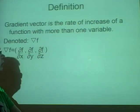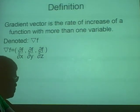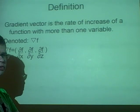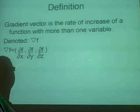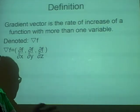First off, a definition as always. The gradient vector is the measure of the rate of increase or decrease of a function. So it's just like finding the derivative of a function with more than one variable.